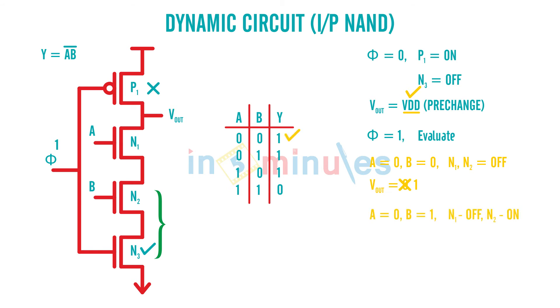Now when A is equal to 0 and B is equal to 1, A is 0 means N1 is off, N2 is on. Even this is off, this is on, still there is a disconnect because all three are connected in series so no path to ground so output will not have the path to discharge so output will still stay to 1.